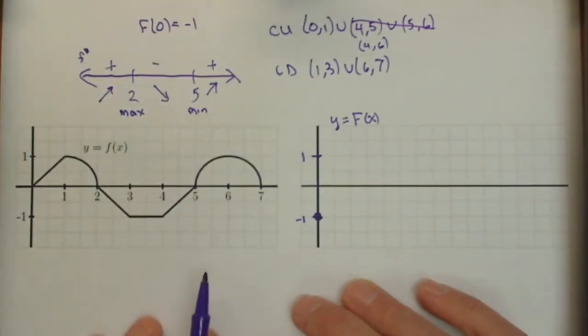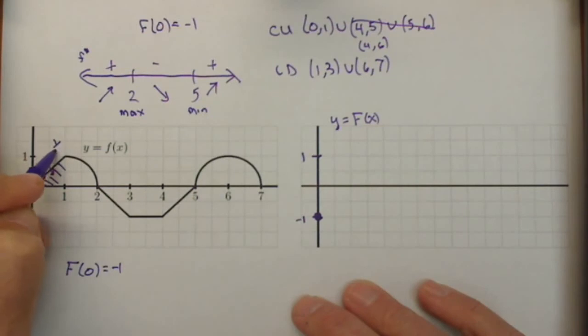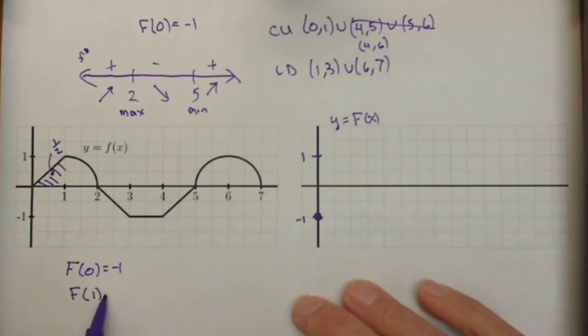All right, let's find out some function values so we can get a guide on plotting. Now we know we're starting out at f of 0 equals negative 1. Now we have to look at how much we're changing as we go from 0 to 1. So what we're going to do is find areas. This is going to be an area of positive 1 half. So that means to get to f of 1, we're going to start at negative 1, and we're going to increase a half. So that's going to put us at negative 1 half.